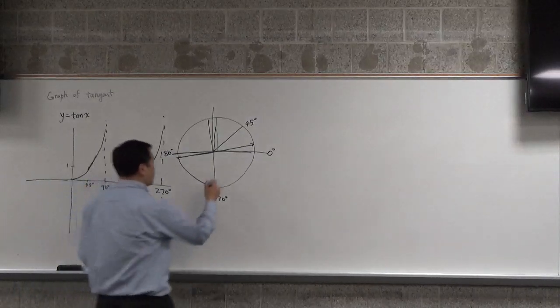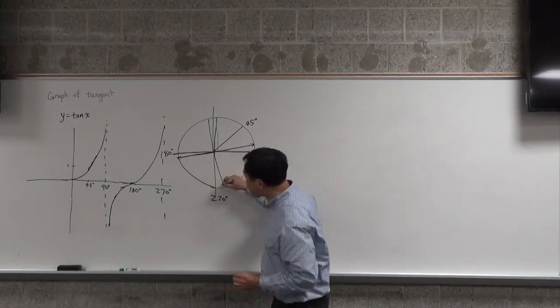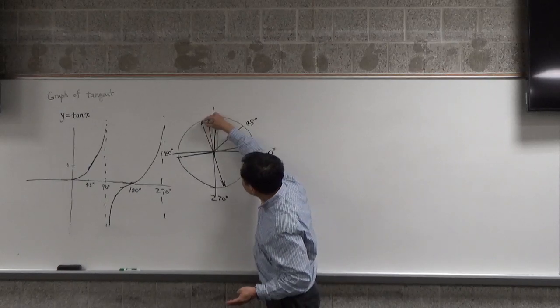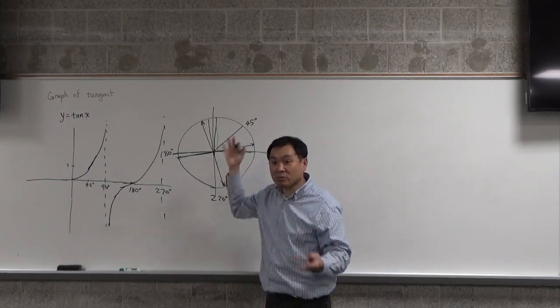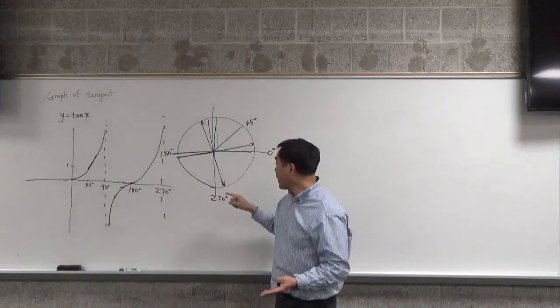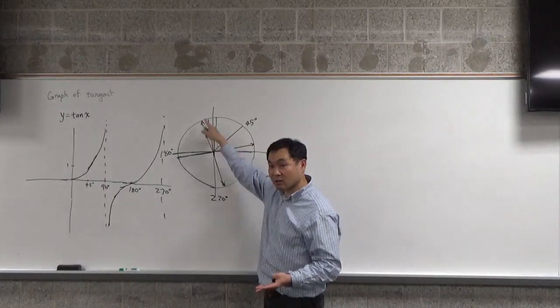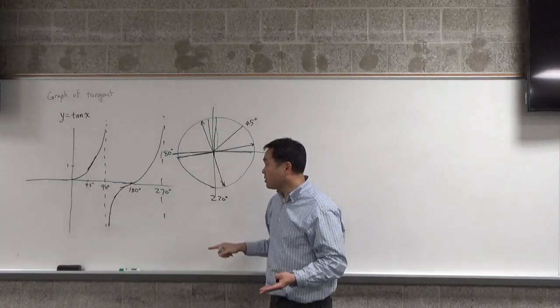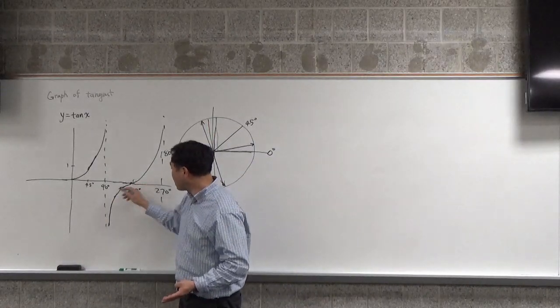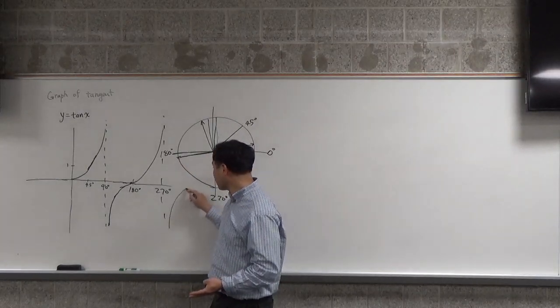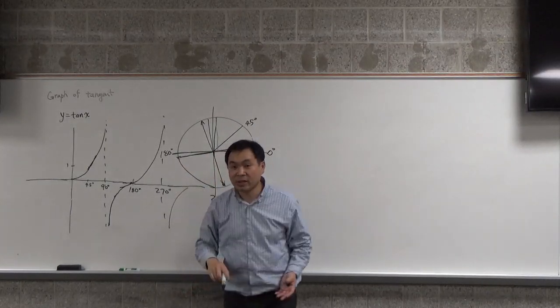And then, if you're past 270, again, it's the same story. This ray and this ray, they're on the same line, so they have the same slope. So the value of the tangent of this ray would be the same as the slope of the tangent of this ray. So the values, this value from 90 to 180 will be copied and pasted over here. So that's the graph of the tangent.